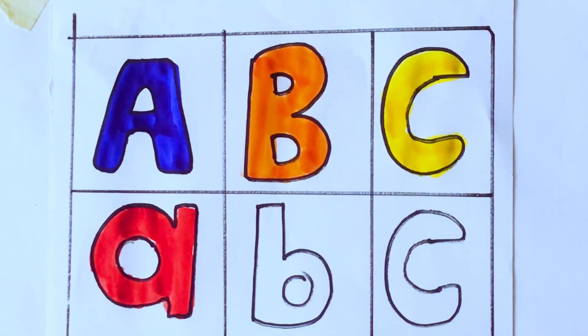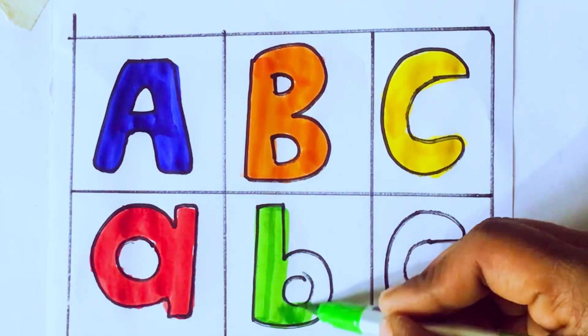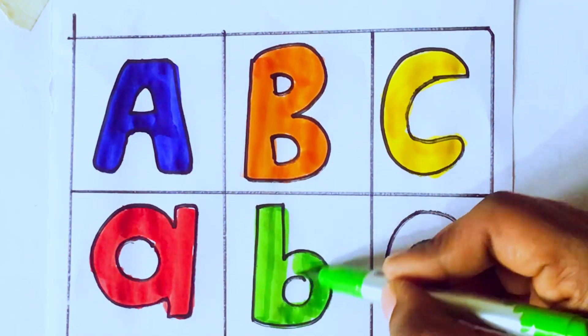Green color, b. Small b. B for ball. B-A-L-L, ball.